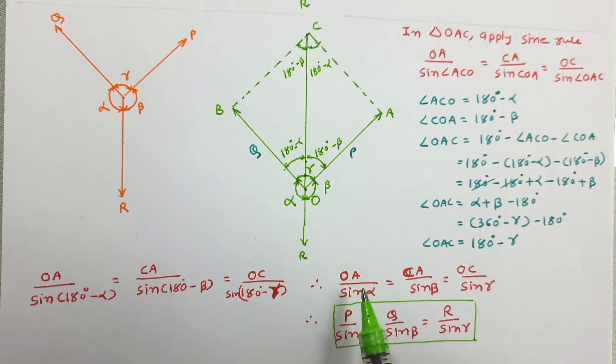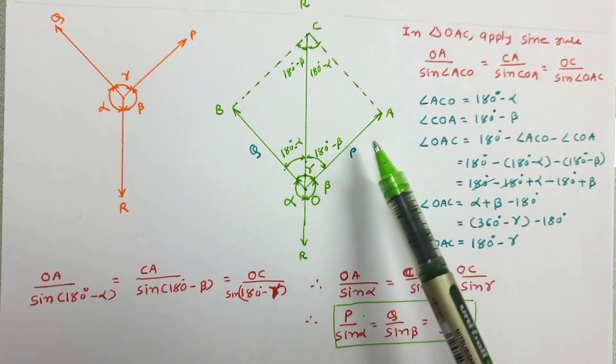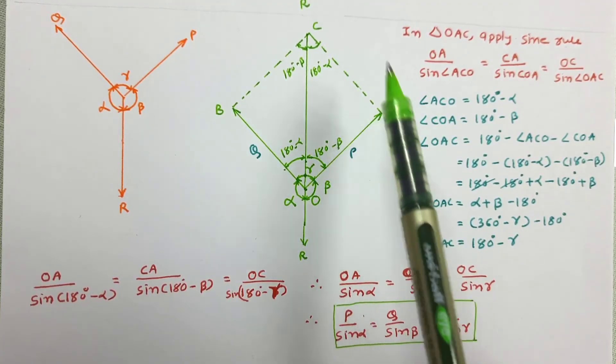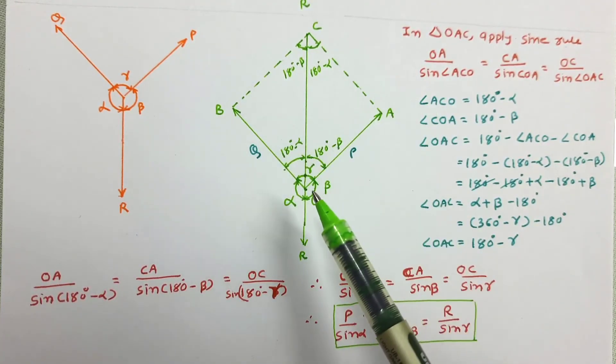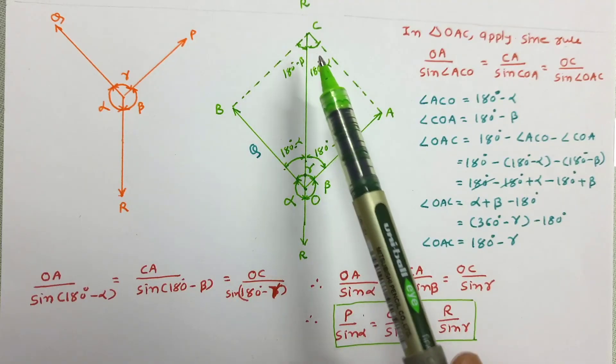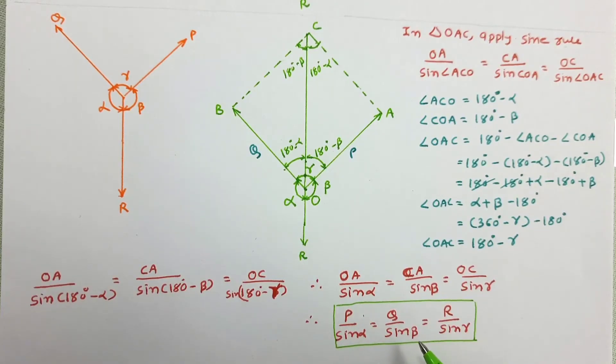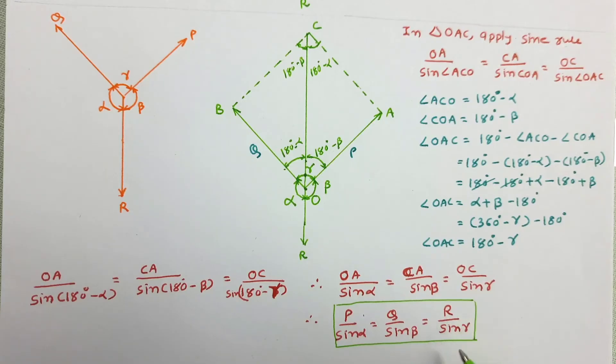In addition to that, we know that OA that is force P, CA that is force Q, and OC that is force R. So we can write P upon sine alpha, that is equal to Q upon sine beta, that is equal to R upon sine gamma. So this is the required equation of Lamy's theorem.